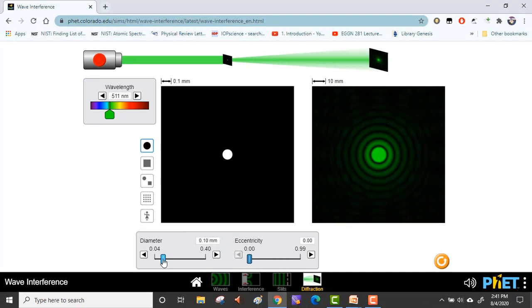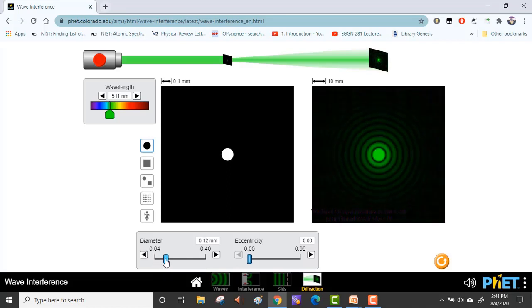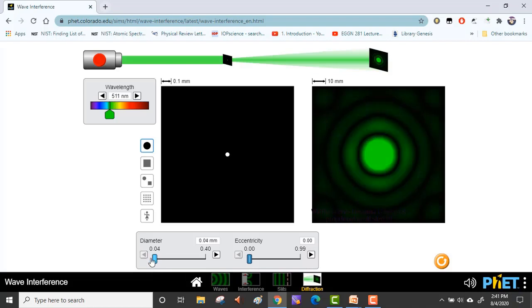Now we make the aperture even smaller. We can see that as we make the aperture small, the central spot or the central maxima is getting bigger. Let's do it again. See, as we reduce the length of the aperture, the central spot gets bigger. Therefore, we conclude that the width of the central zero-order maxima in case of diffraction is inversely proportional to the width of the aperture.